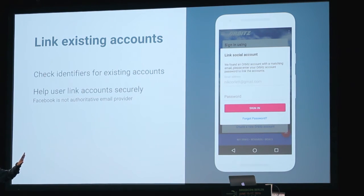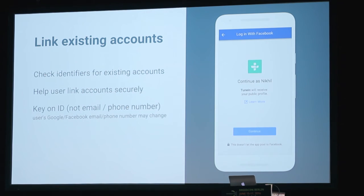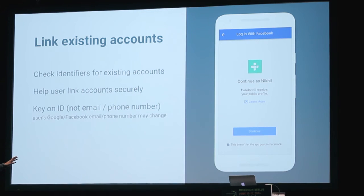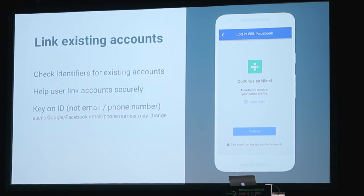Phone numbers and email address identifiers can change. If you're logging someone in with Google or Facebook, you'll get another identifier with it — a stable identifier string that you can store in your user database. That's really the one you should use to look up your user when they come back. If you're using Facebook or Google login, don't rely just on the email address. That's a bigger change in a back-end database, but it's a really important one to handle these edge cases — people's email addresses may change.